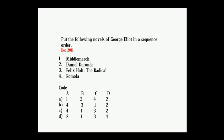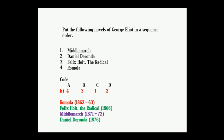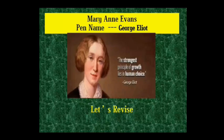Next question: put the following novels of George Eliot in chronological order — Middlemarch, Daniel Deronda, Felix Holt, Romola. Correct answer: Romola (1862), Felix Holt (1866), Middlemarch (1871–72), Daniel Deronda (1876). The correct option is B.